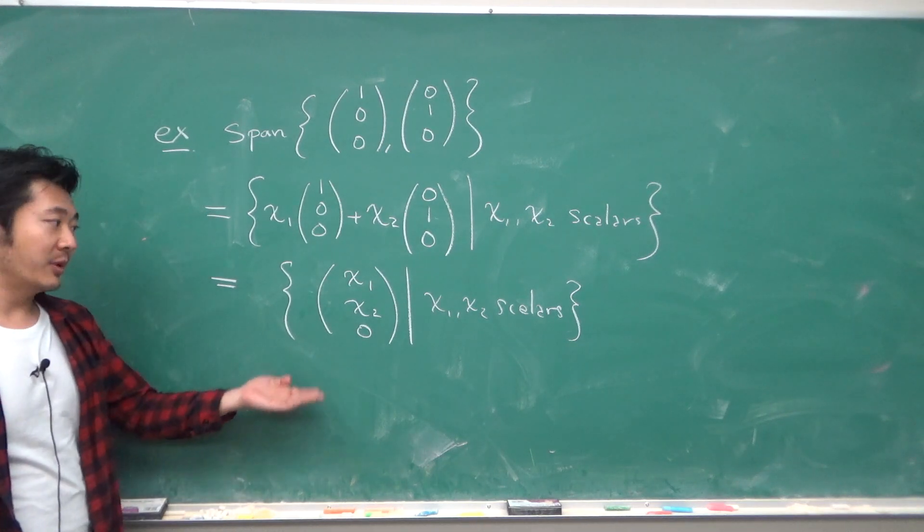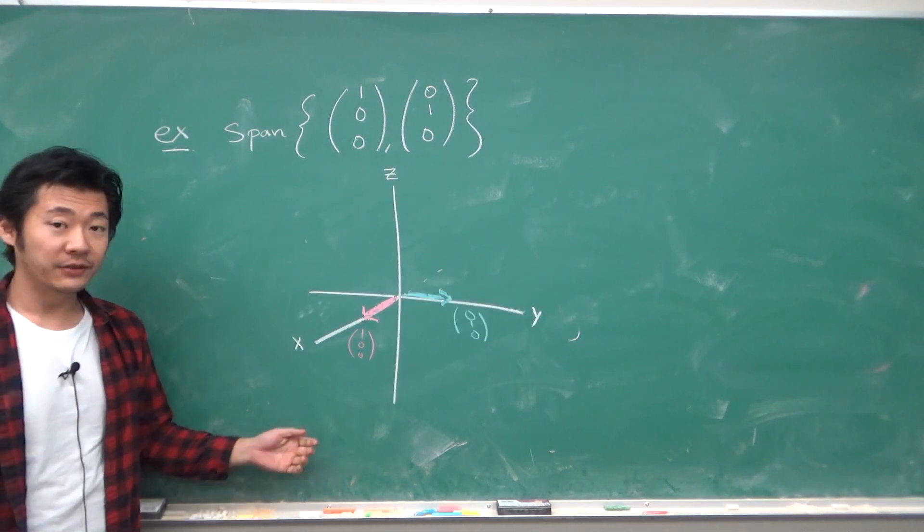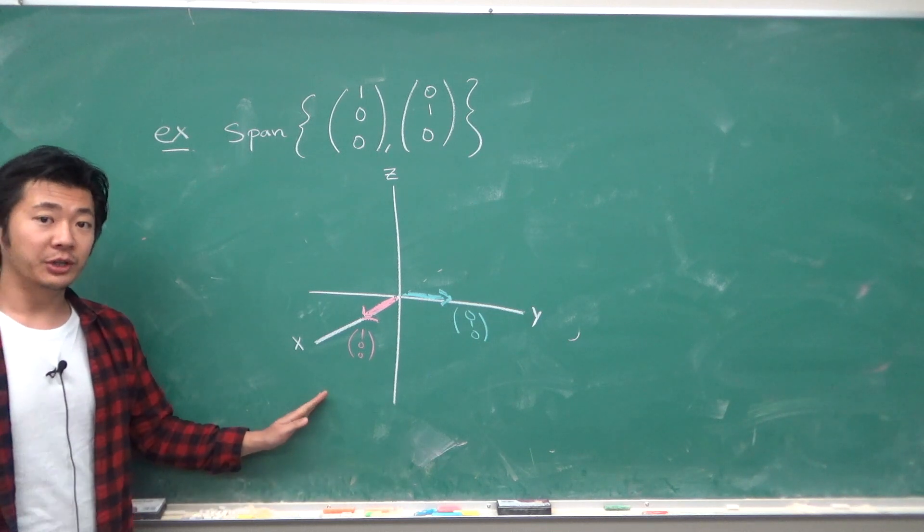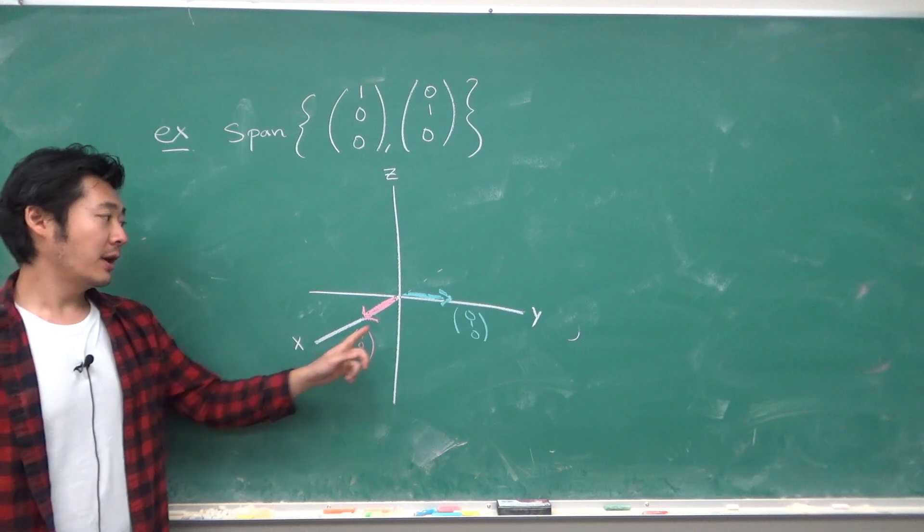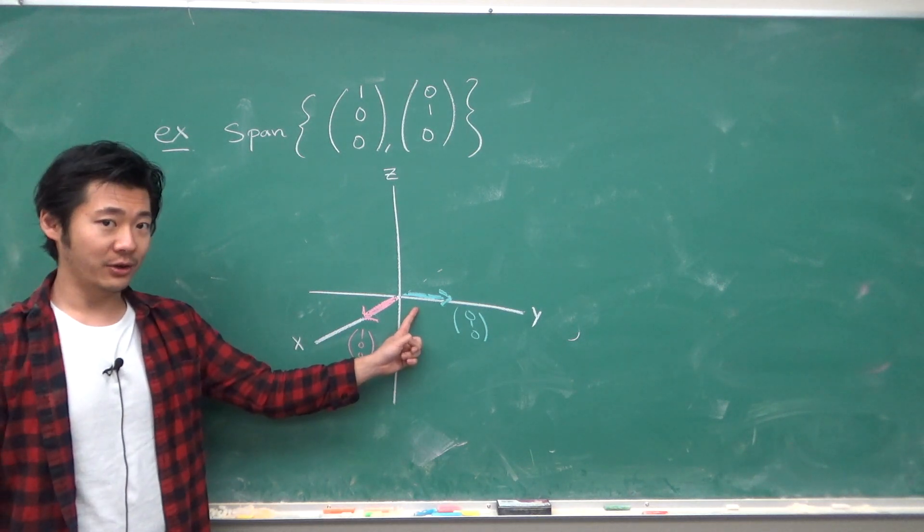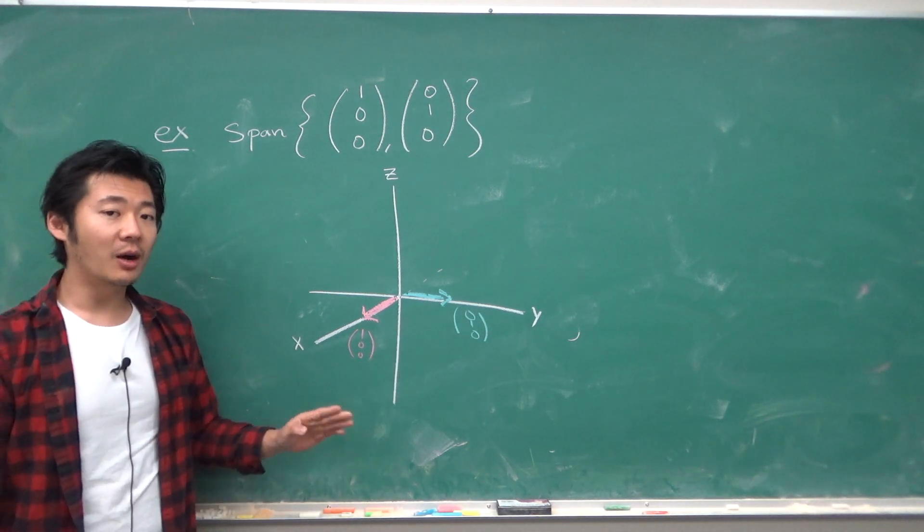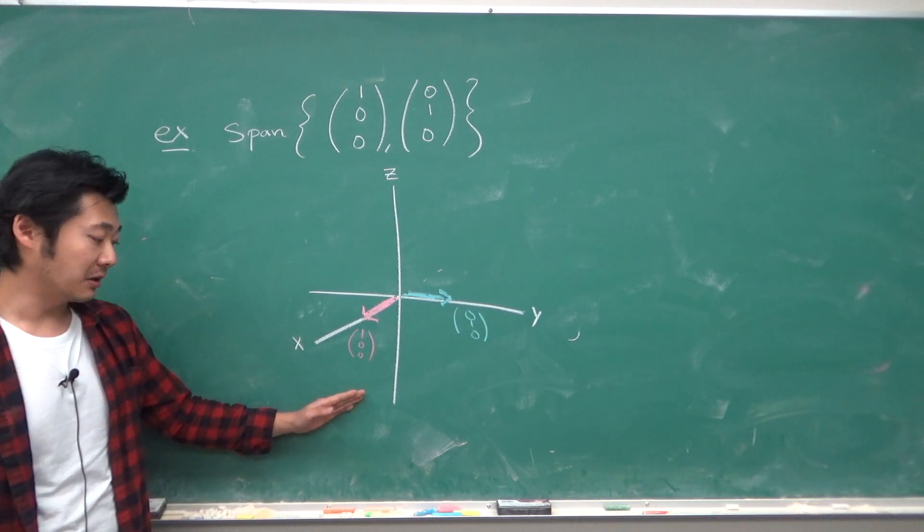So it's a set of vectors that can be written out like this. To give a geometric interpretation, we draw it out. So the pink vector is the vector 1, 0, 0, and the blue vector is the vector 0, 1, 0. And we want to take all possible linear combinations of these two vectors.